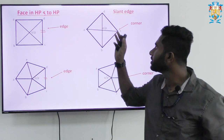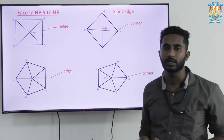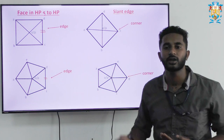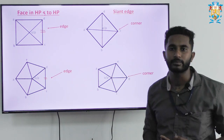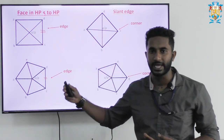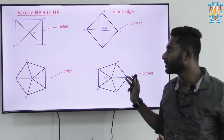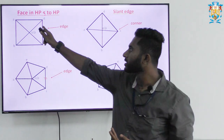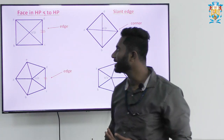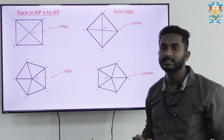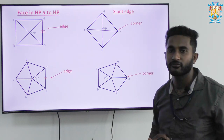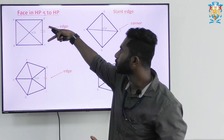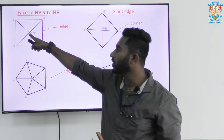Next, if in your question it is given that the corner of the square pyramid, pentagonal pyramid, or hexagonal pyramid is in HP or VP, then the corner is to be kept at the right side. Whichever is to be kept on HP or VP, that is to be kept at the right side. In one more condition, where the slant face or the triangular face is concerned — the triangular face is formed by joining two points from the base and one point of the apex.